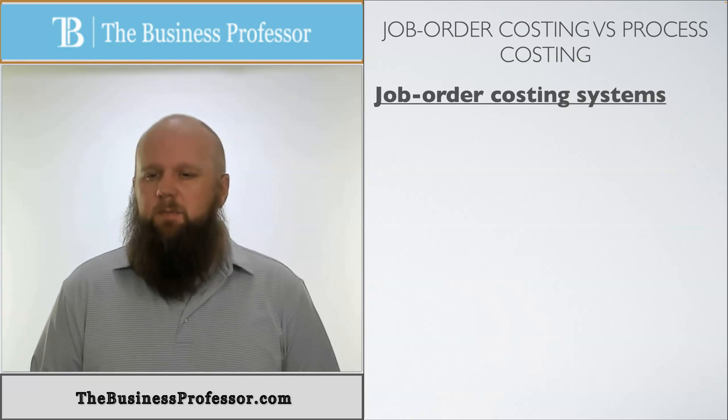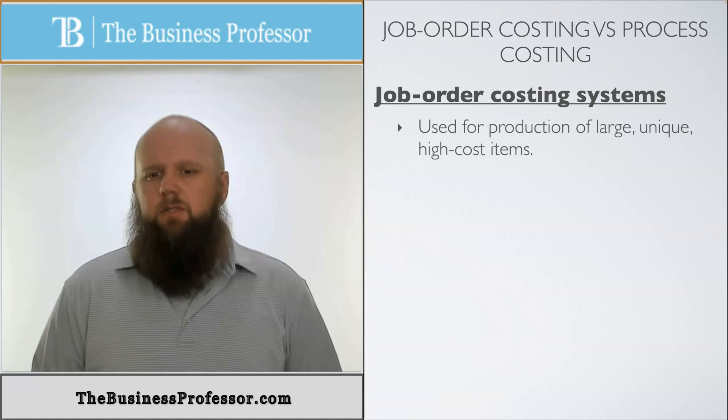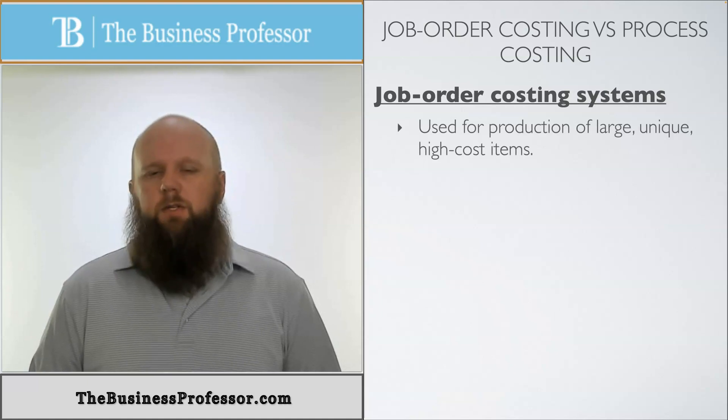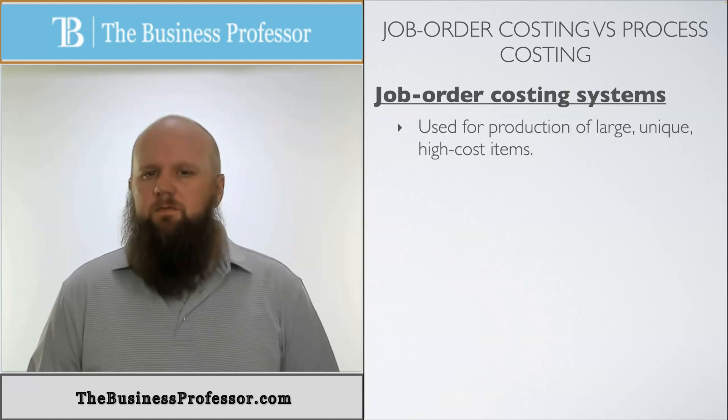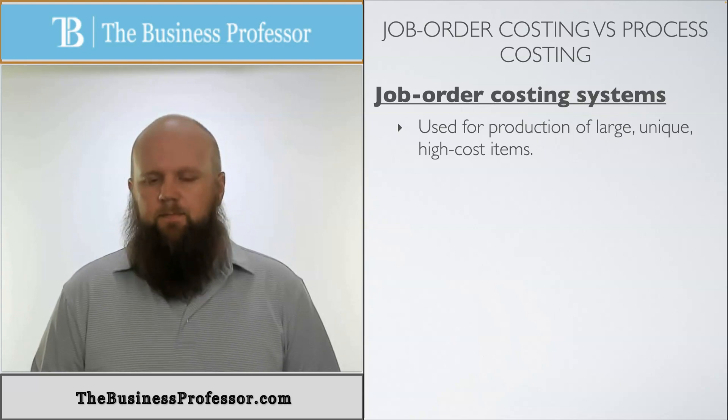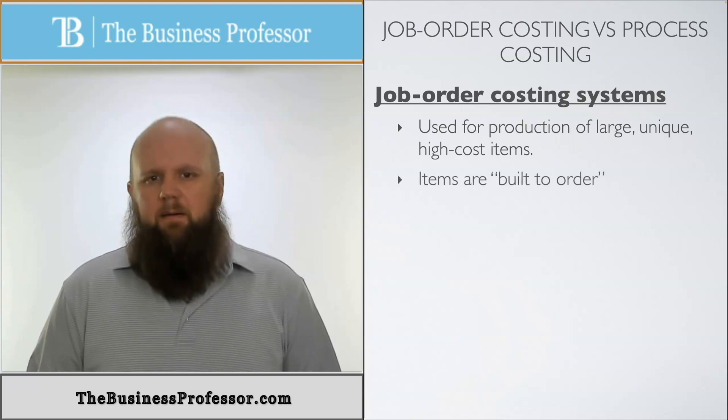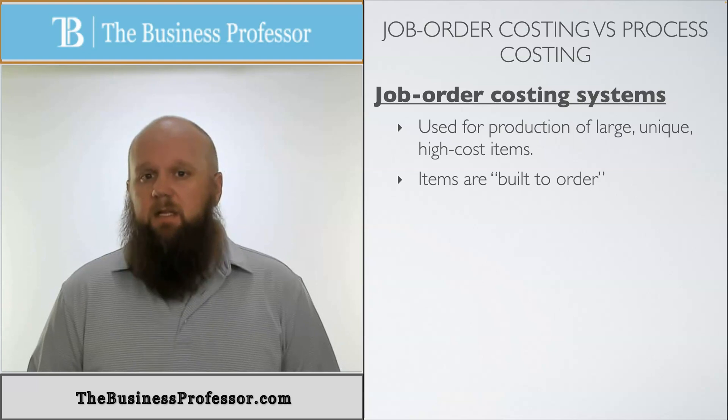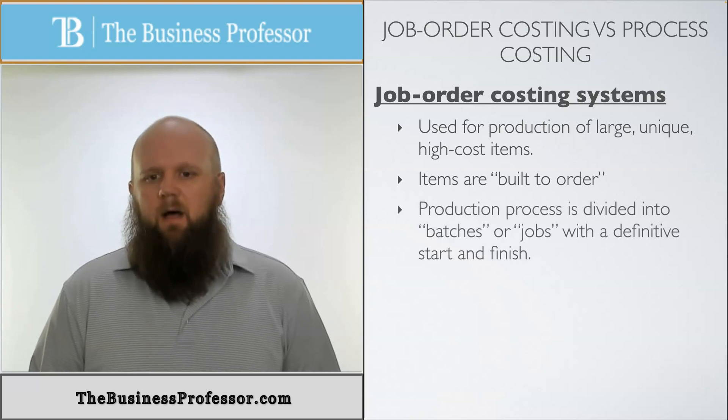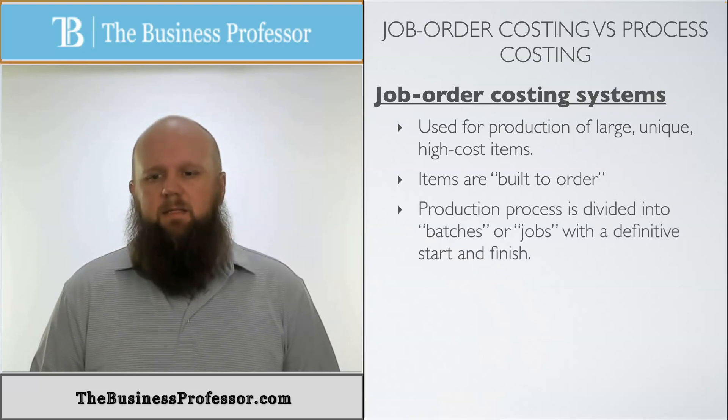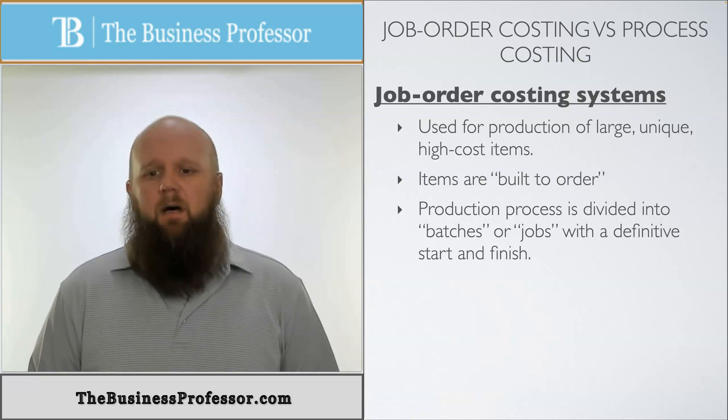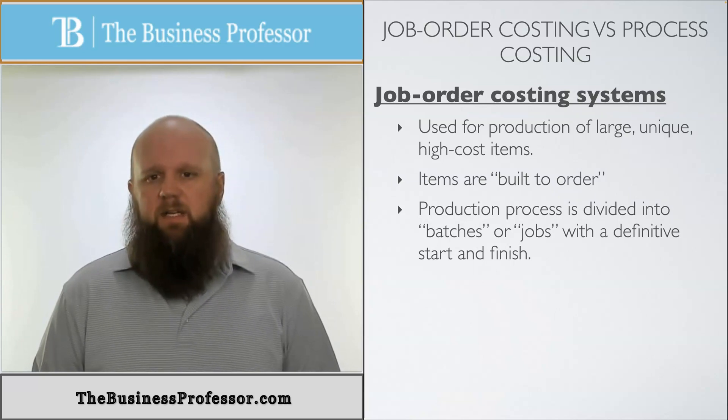Now job-order costings are very specific. These are used for production of large, unique, high-cost items that are very customizable. These are items that are usually built to order because of the customization, and the production process is divided into what we call batches or jobs with a definitive start and finish time.